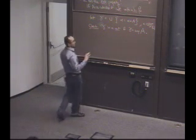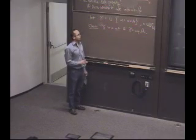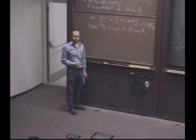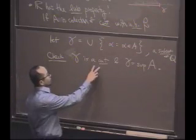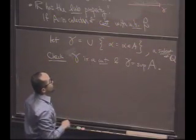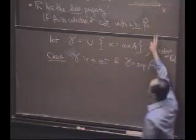These are all things that you can see. We won't write them down because they are written carefully in your book. But let's just see if they're believable. First of all, why is gamma non-trivial? Can you see why gamma isn't empty?